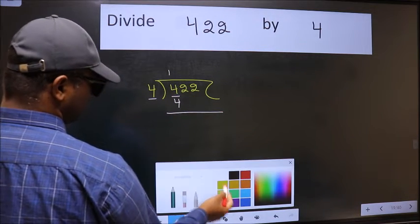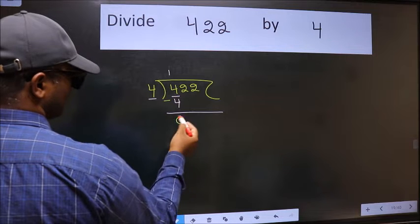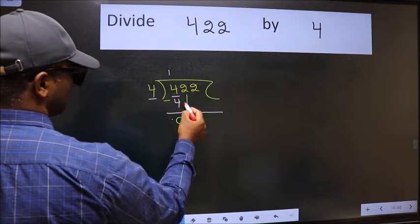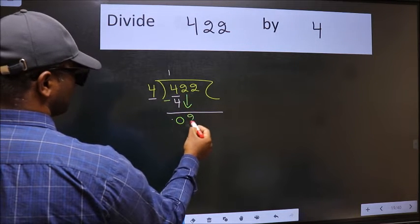Now we should subtract. We get 0. After this, bring down the next number. So 2 comes down.